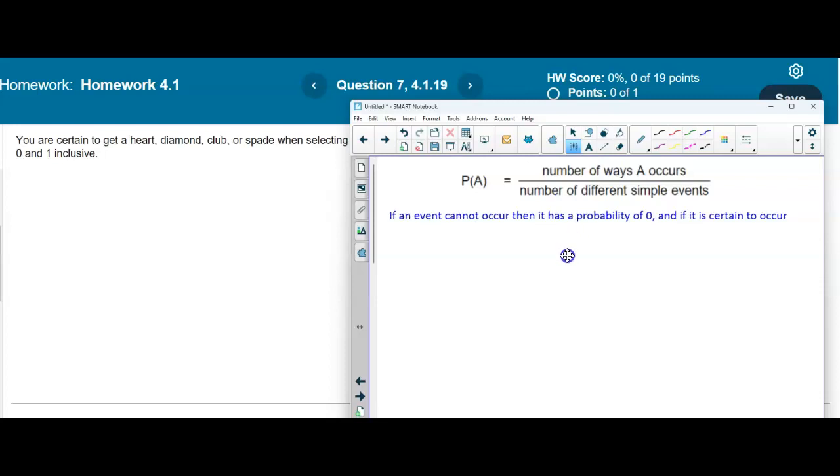If an event cannot occur then it has a probability of 0, and if it is certain to occur then it has a probability of 1. So we want to use this information to determine the indicated degree of likelihood as a probability value.